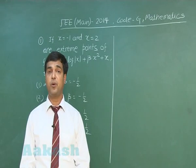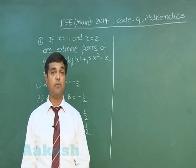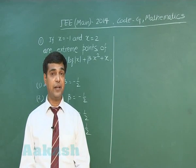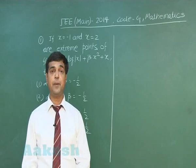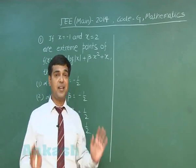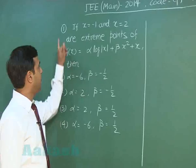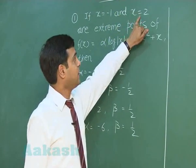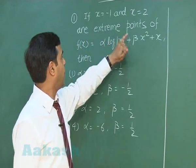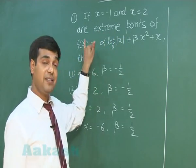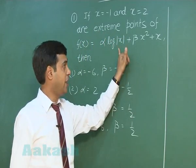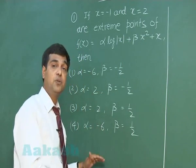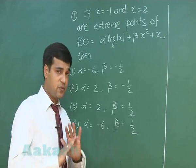Hello students, today we are going to solve the question paper of JEE Main 2014 offline mode, conducted on 6th April 2014. Let's start with Code G Maths paper, Question Number 1: If x equals minus 1 and x equals 2 are extreme points of the function f(x) equals alpha log|x| plus beta x squared plus x, then we have to find the values of alpha and beta.